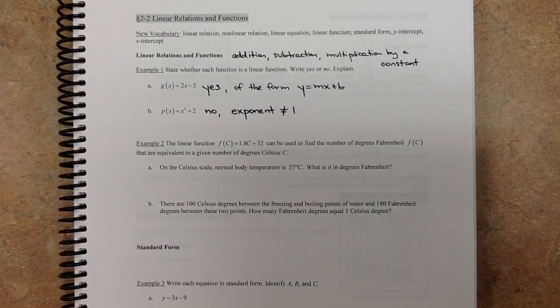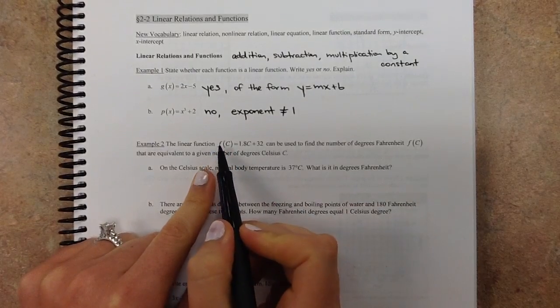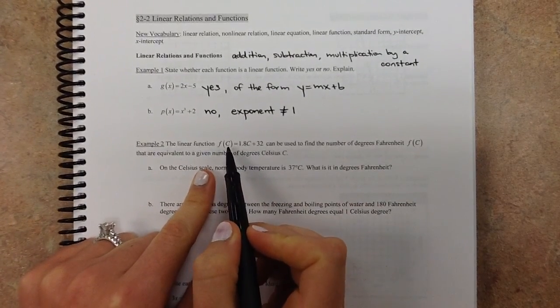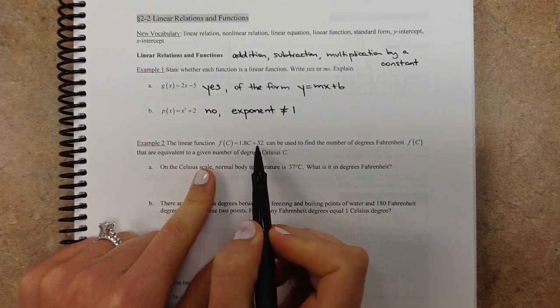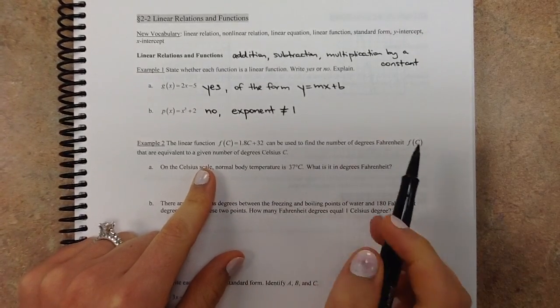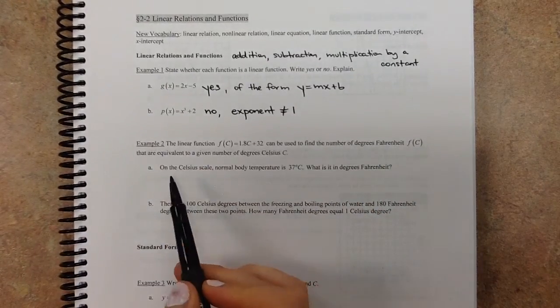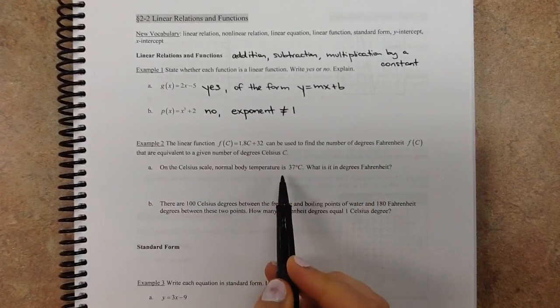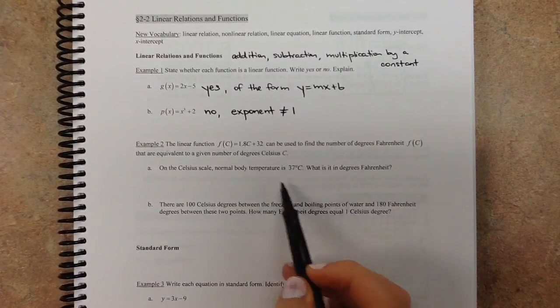Next we've got this linear function, f of c. Remember this function notation from the last note? So a function of degrees Celsius. That's what that capital C means. It's 1.8c plus 32. You can use it to find the Fahrenheit degrees if you're given Celsius. So this is on the Celsius scale, normal body temperature is 37 degrees Celsius. So this is a value of c.